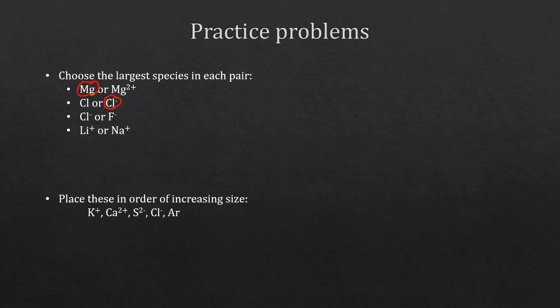Now let's look at cases where atoms have the same type of charge but are in different places on the periodic table. Cl minus is below F minus, so just like Cl is bigger than F, Cl minus is bigger than F minus. Similarly, for lithium plus versus sodium plus: sodium plus is below lithium plus on the periodic table, so sodium plus is going to be our largest.